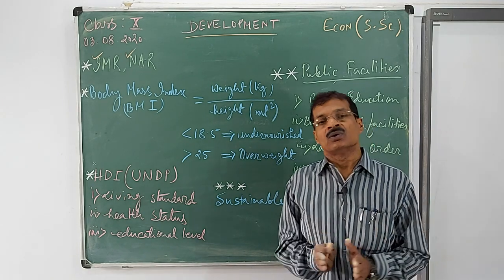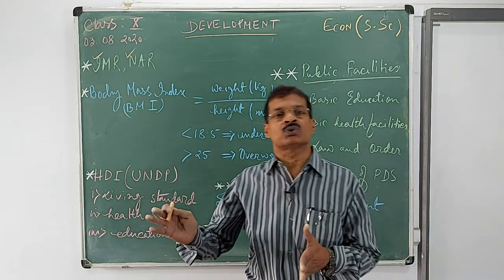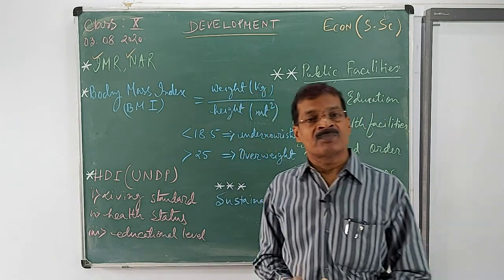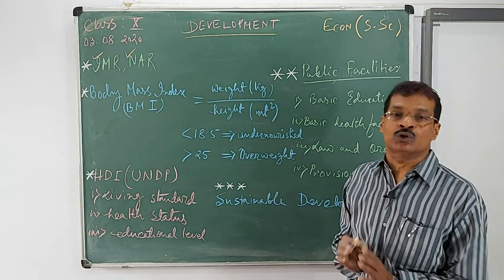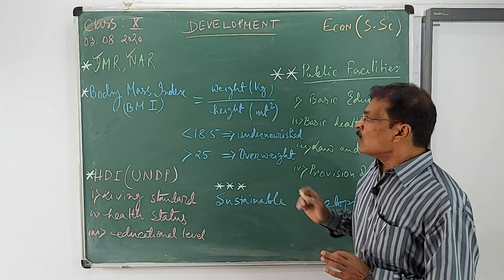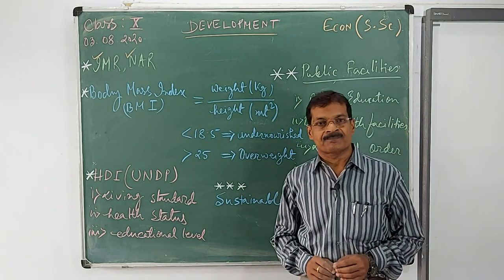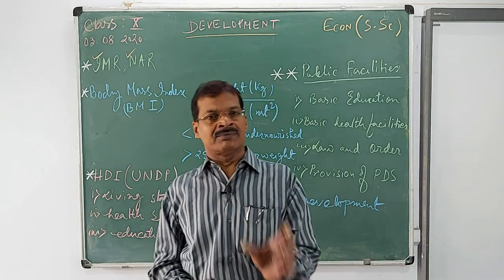Gross enrollment ratio is the number of children who are entering into the different formats of schools: primary education, secondary education, and higher education.